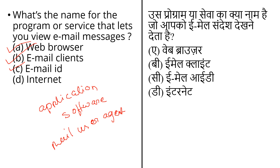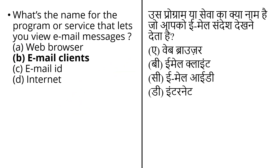The last option is the Internet. The Internet is an electronic communication network that connects computer networks and organizes computer facilities around the world. The correct answer to this question is option B: an email client is the name for the program or service that lets you view email messages.